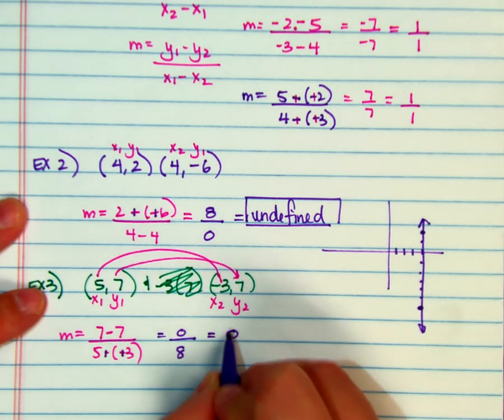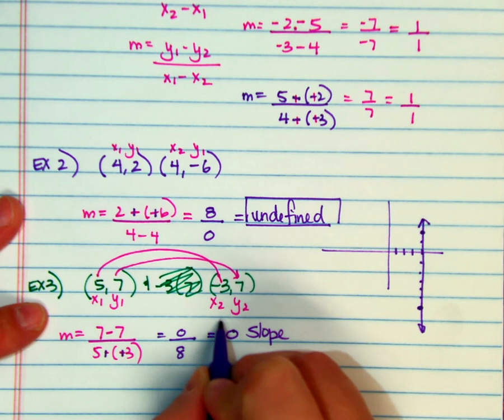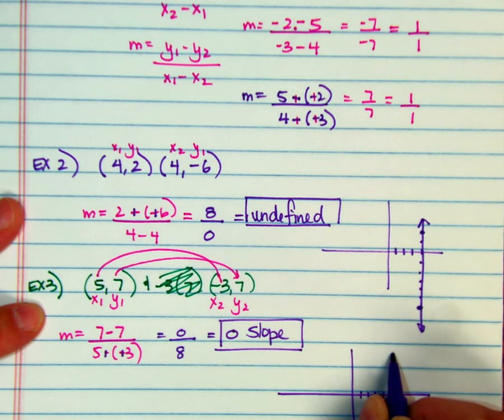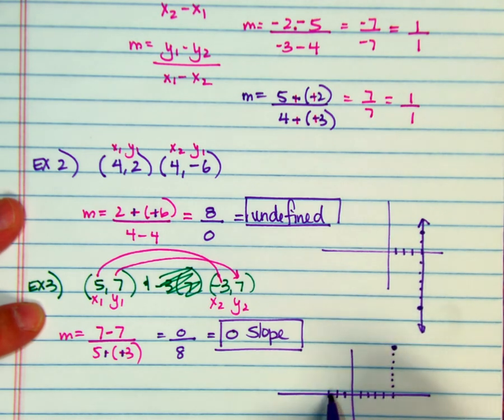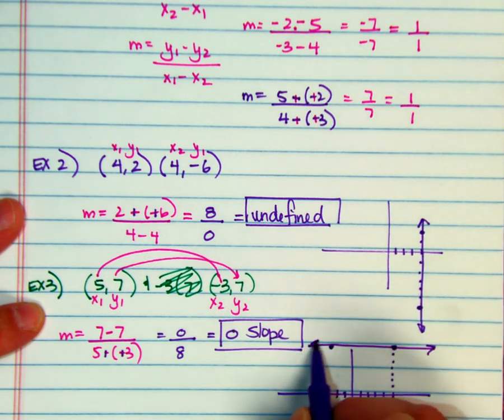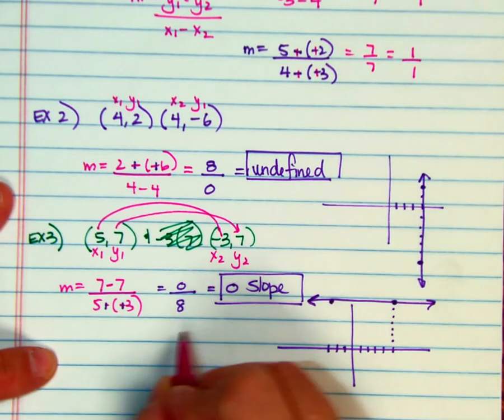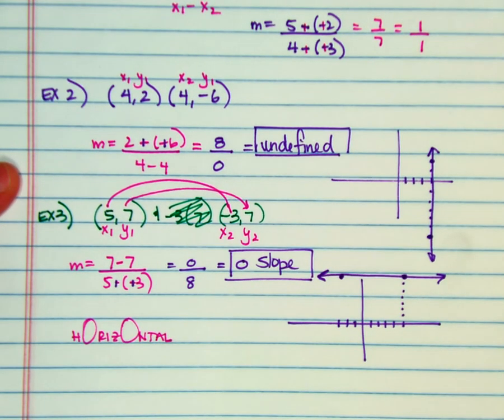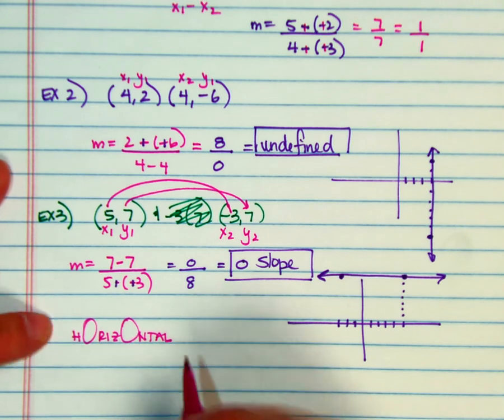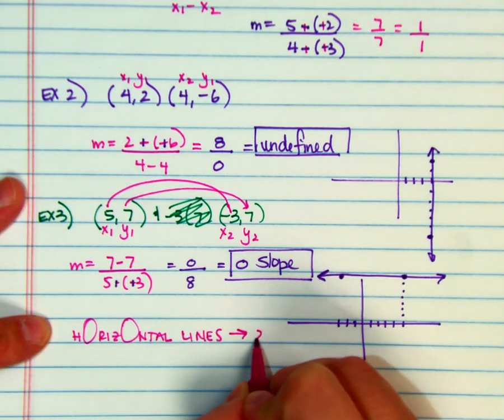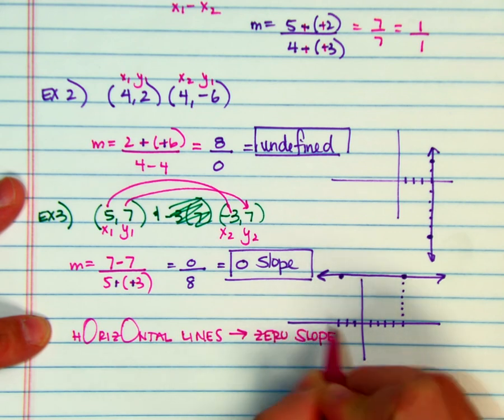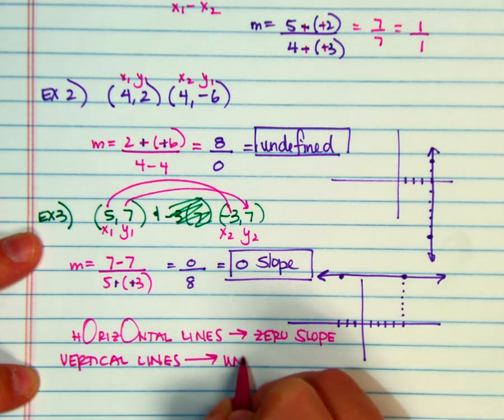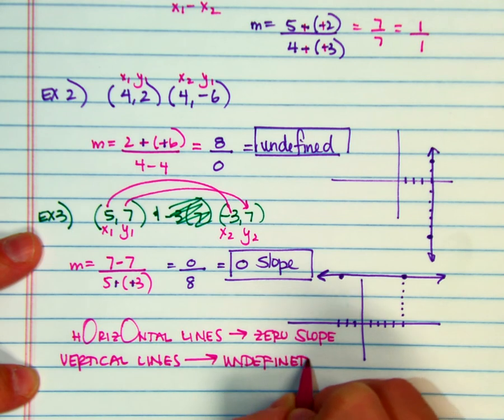So 0 over 8 gives me a 0 slope. So if I were to graph this, 5, 7, and negative 3, 7, I am going to end up with a horizontal line. Another way to remember this is that if this is a horizontal, horizontal lines have a 0 slope. So those O's look an awful lot like 0's. So horizontal lines have a 0 slope. And vertical lines have an undefined slope.